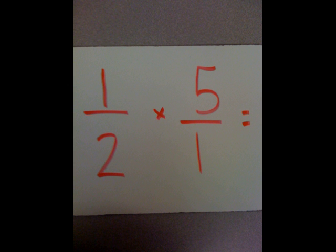So any whole number, if you put it over a 1 and make 1 the denominator and 5 the numerator, you now have your whole number as a fraction. So if you're multiplying this times 7, you would just put 7 over 1. But today, we're going to do 1 half times 5.